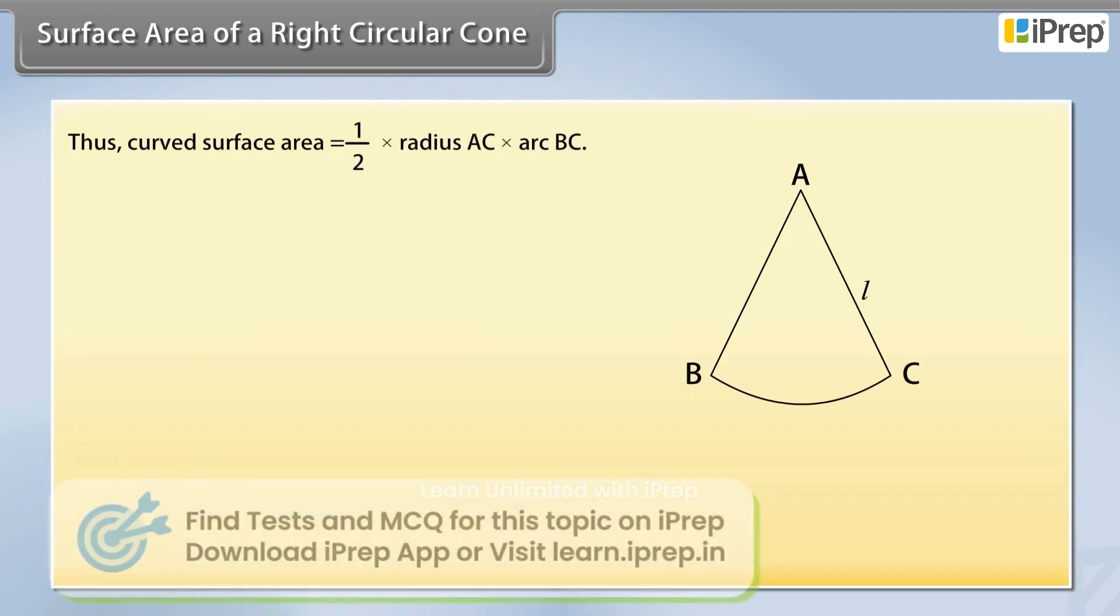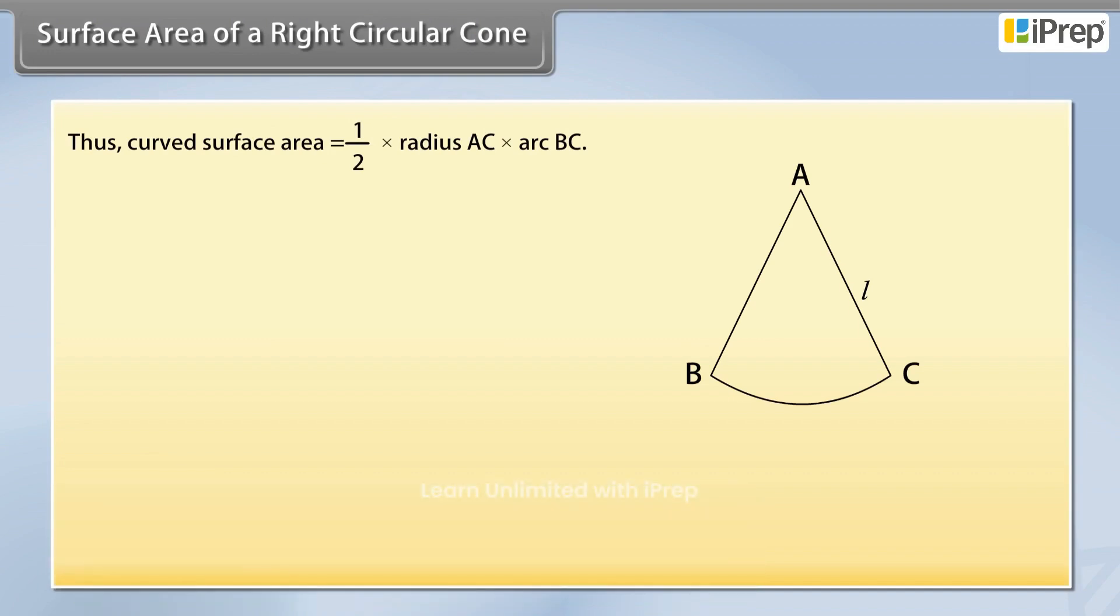Thus, curved surface area is equal to 1/2 × radius AC × arc BC. This is equal to 1/2 × L × 2πR = πRL square units, where R is the radius and L is the slant height.